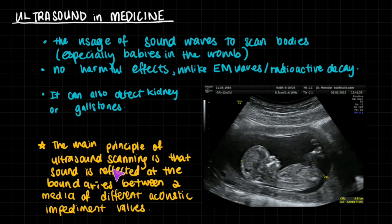The main principle of ultrasound scanning is that sound is reflected at the boundaries between two media of different acoustic impedance values. Imagine you have bone, which is much more dense where sound travels much faster, and blood, which is less dense where sound travels significantly slower. At the boundary of these two different materials, sound is reflected. You detect those reflected waves to gain an image of something inside your body.